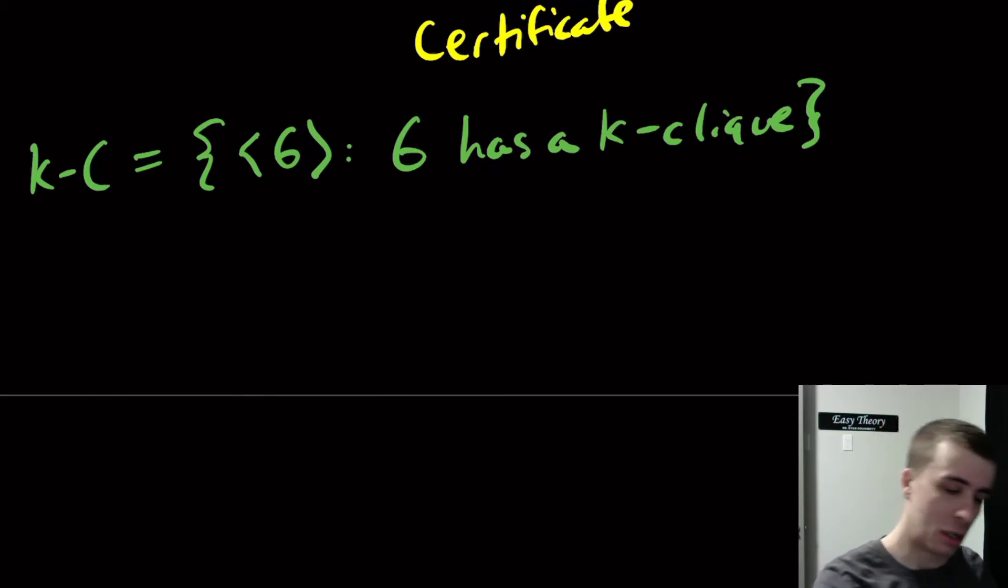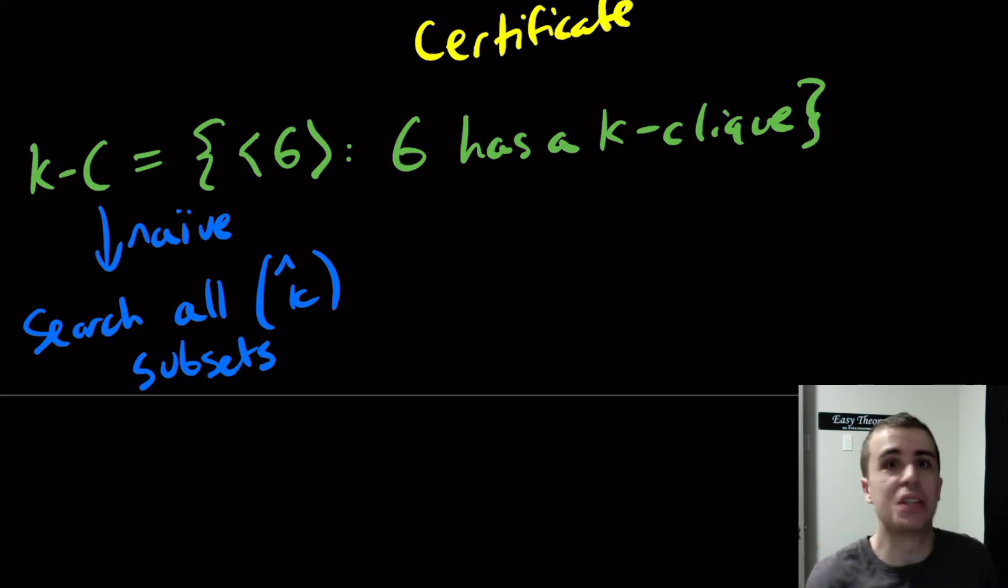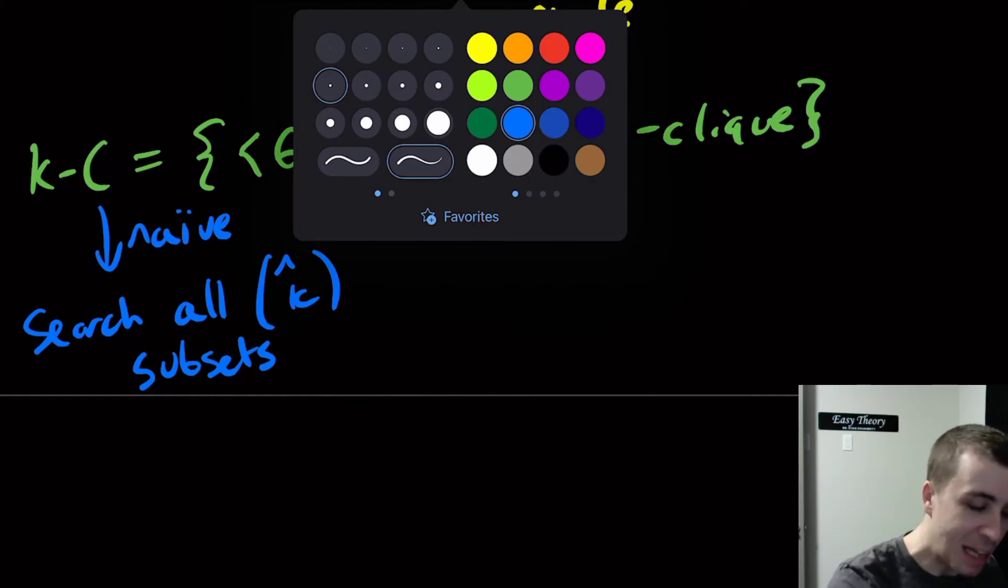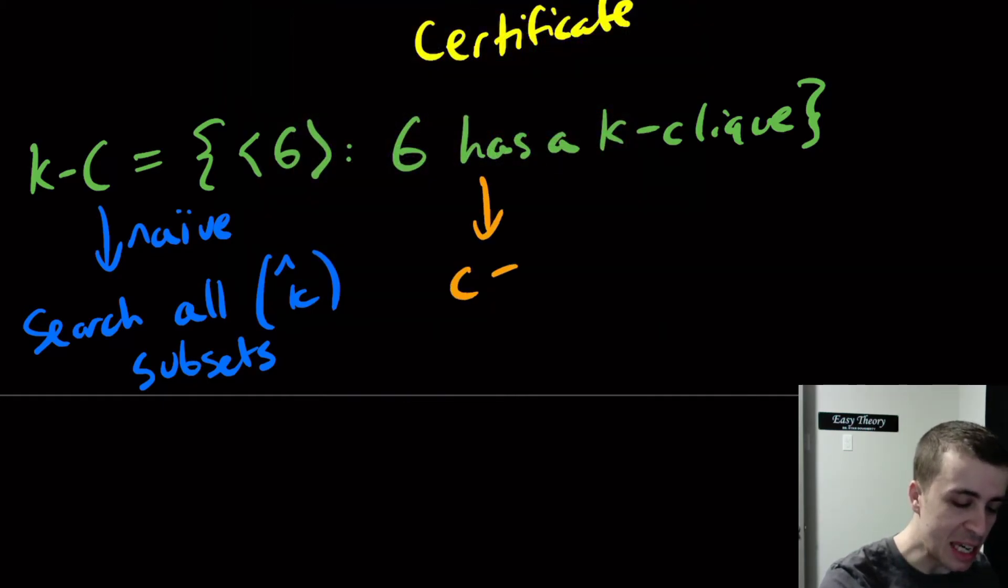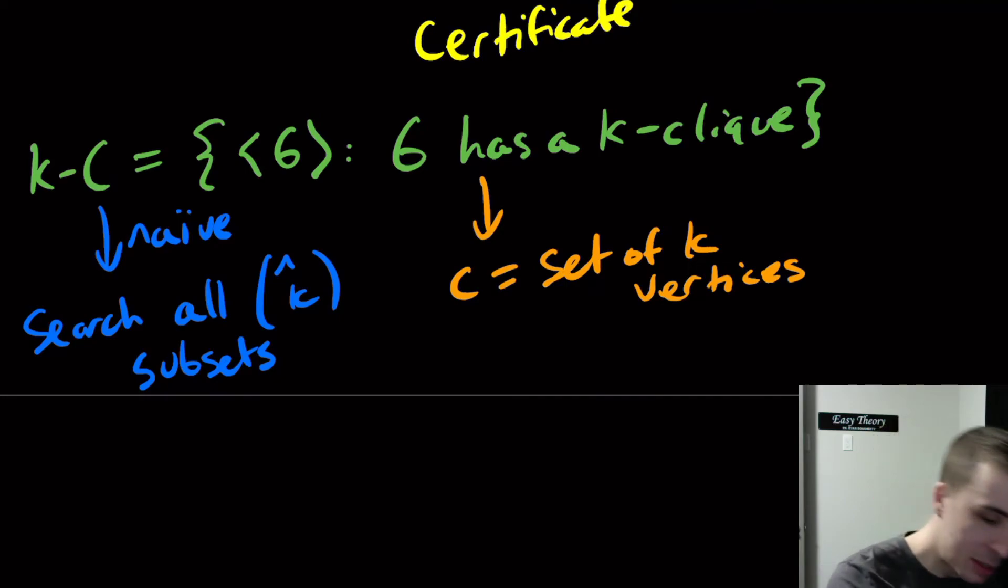The naive approach, the naive thing to do, is to search all n choose k subsets of vertices. If n is the number of vertices, I just look at every single subset of size k and check if that's a k-clique. If I provide to you k vertices, then you can determine, is this certificate valid? Does this help me solve the problem?